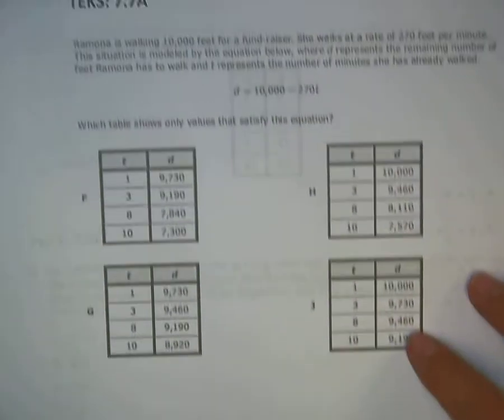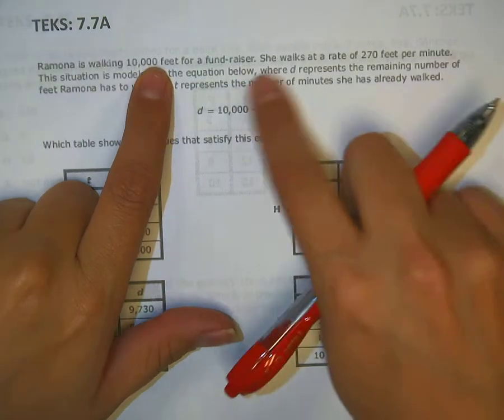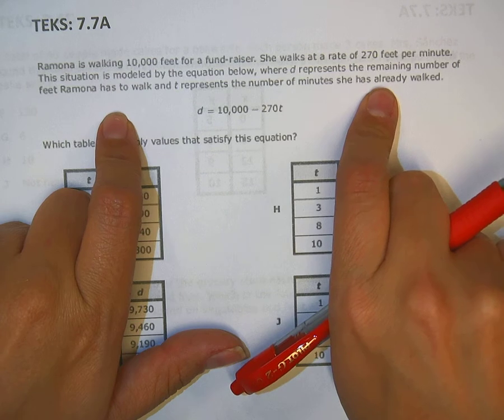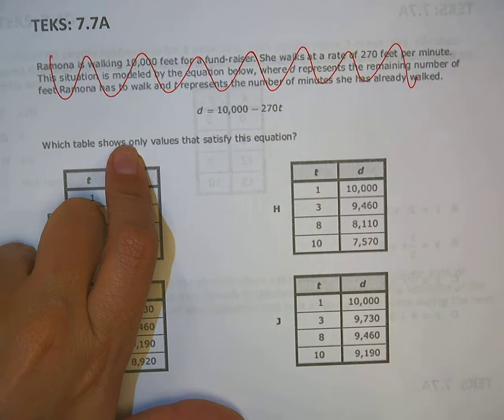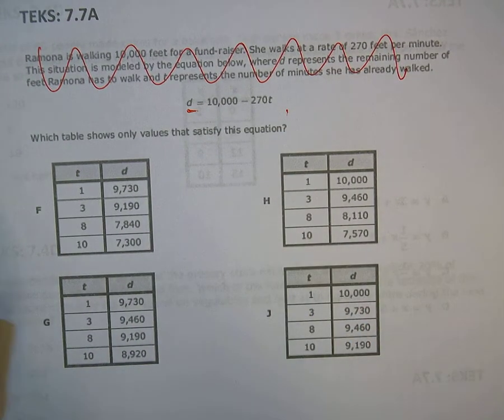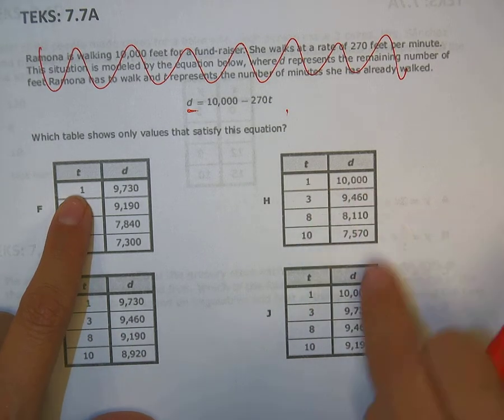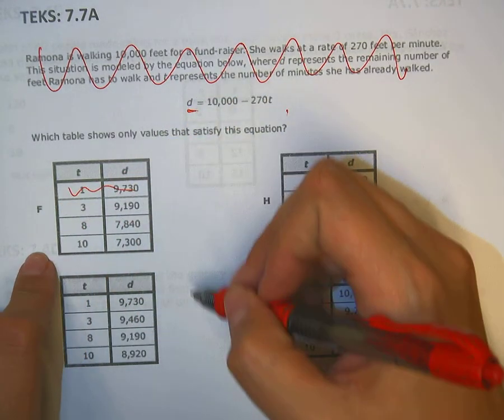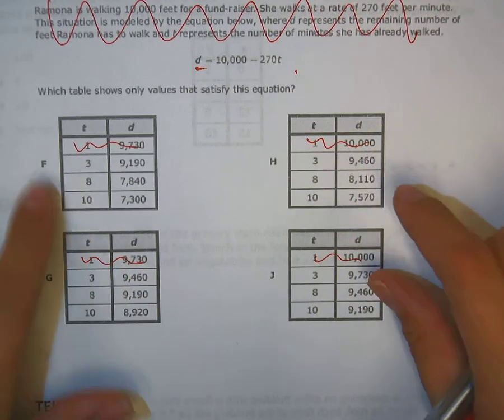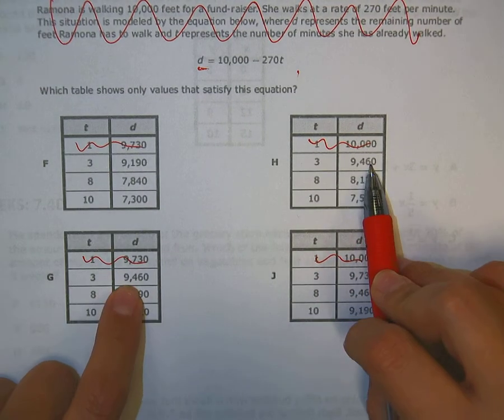Page 8 on equations and inequalities. Ramona's walking 10,000 feet for a fundraiser. She walks at a rate of 270 feet per minute. This situation is modeled by the equation, so we've got this equation and we want to know which table fits. I'm going to plug in numbers. If I plug in a one, will that give me enough different answers? No, so I'm not going to do the one because I would have only eliminated 50 percent. Is three different for all of them? No, three is the same for these two. What about eight?